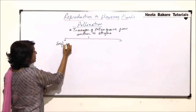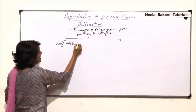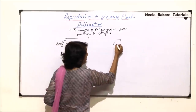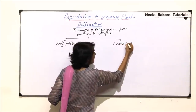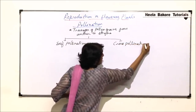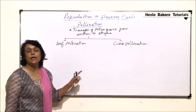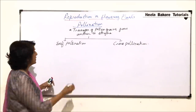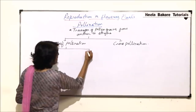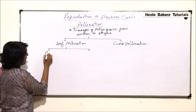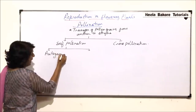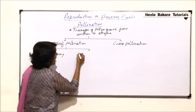We classify pollination into two main categories: self-pollination and cross-pollination. Self-pollination is further subdivided into two types — one is called autogamy and the second one is known as geitonogamy.